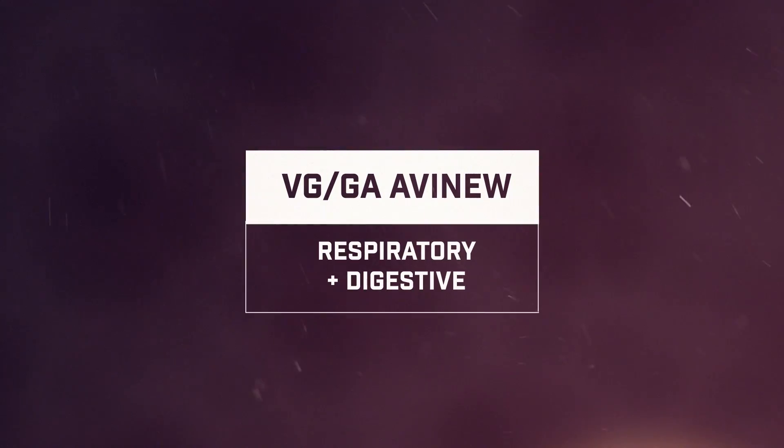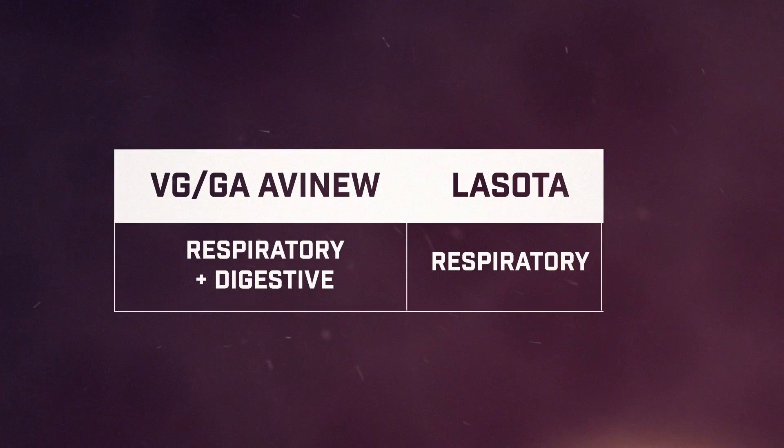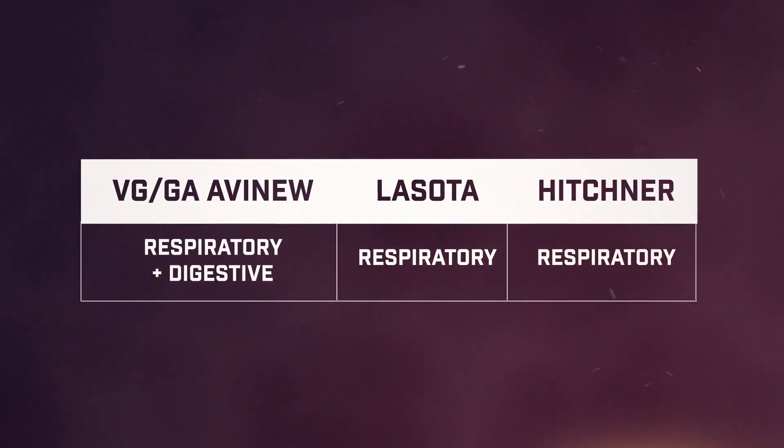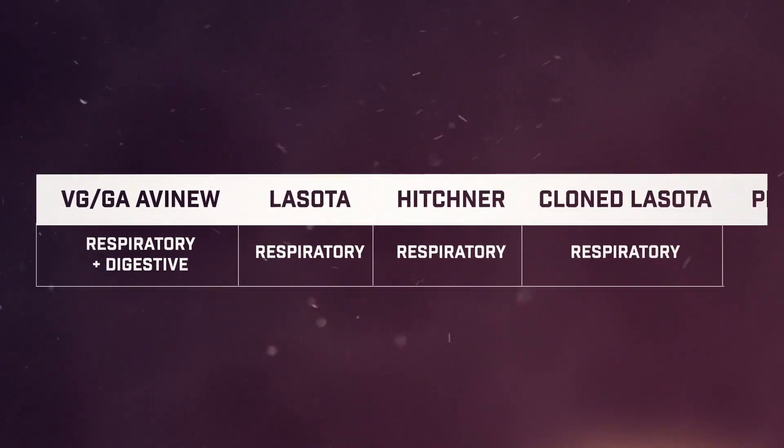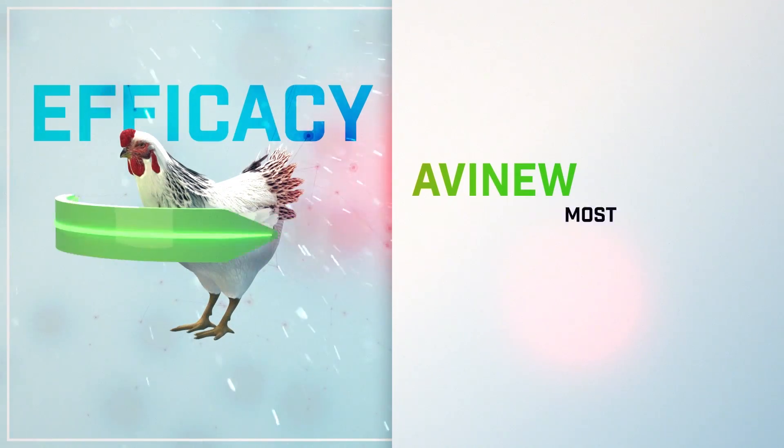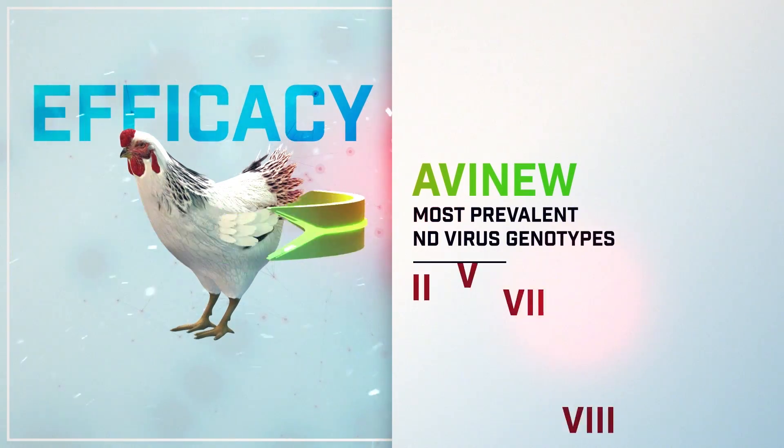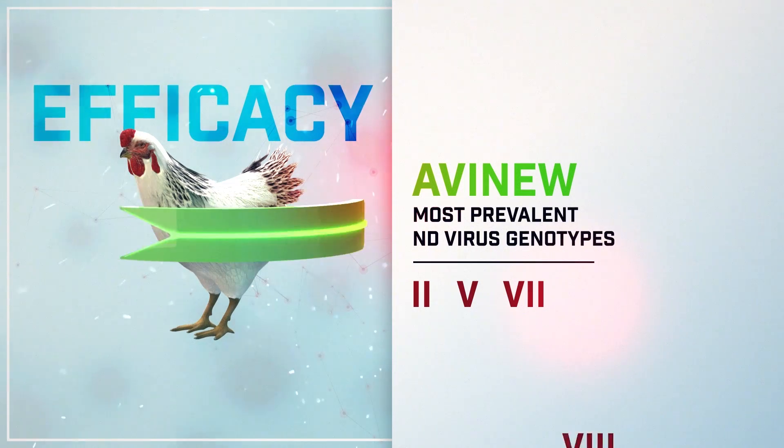The pathogenesis and tissue tropism of the viruses used for vaccination should always be considered when assessing live vaccine efficacy. VGGA Avinew vaccine induces local immunity both in the intestinal and respiratory tracts. Broad protection against velogenic Newcastle disease has been demonstrated. Many studies have proven the efficacy of the VGGA Avinew vaccine against highly velogenic Newcastle disease viruses worldwide.